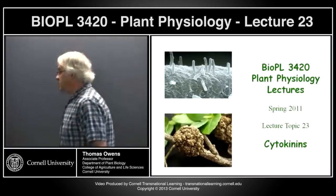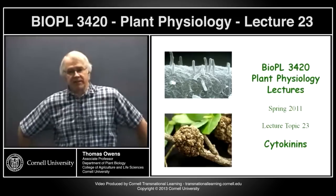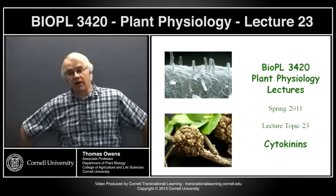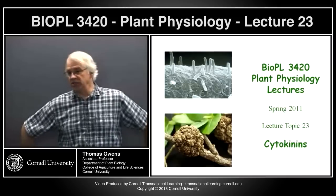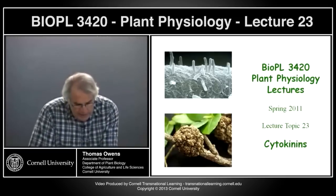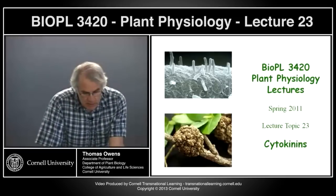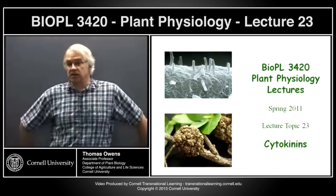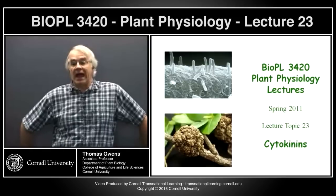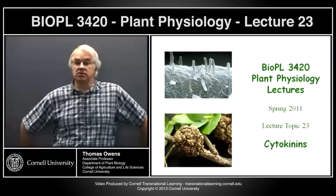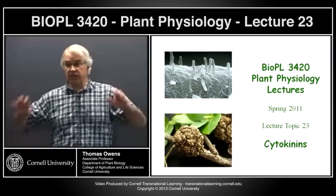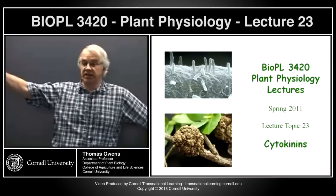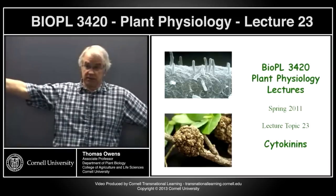When thinking about cytokinins, the most common association for a plant physiologist is their role in cell division. This comes from early observations in plant physiology. If you take any cell from a plant outside the meristem, typically after embryonic development those cells no longer divide — division is limited to a relatively small number of cells. Once a cell is differentiated in a plant, it doesn't divide anymore, except under certain conditions such as wounding.